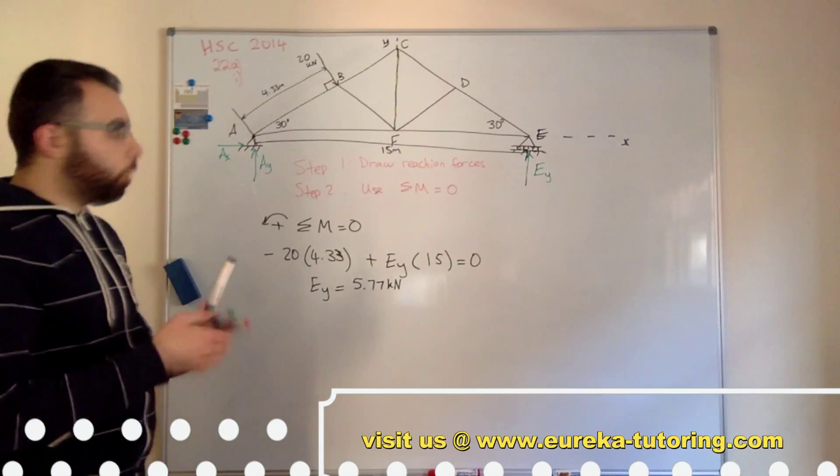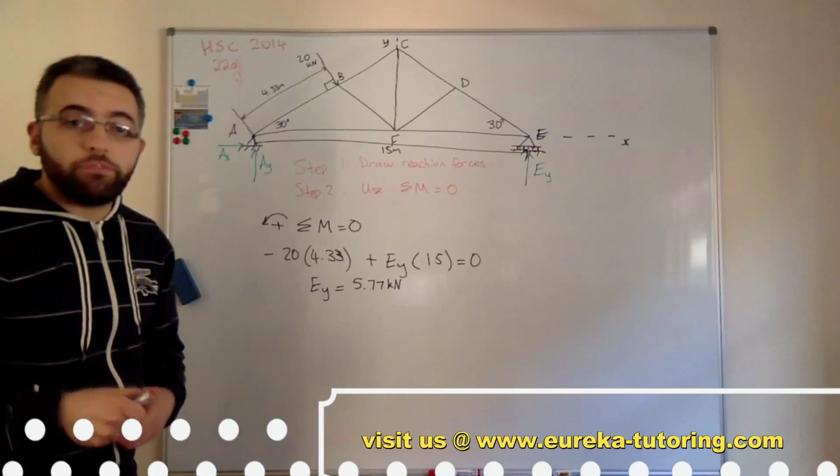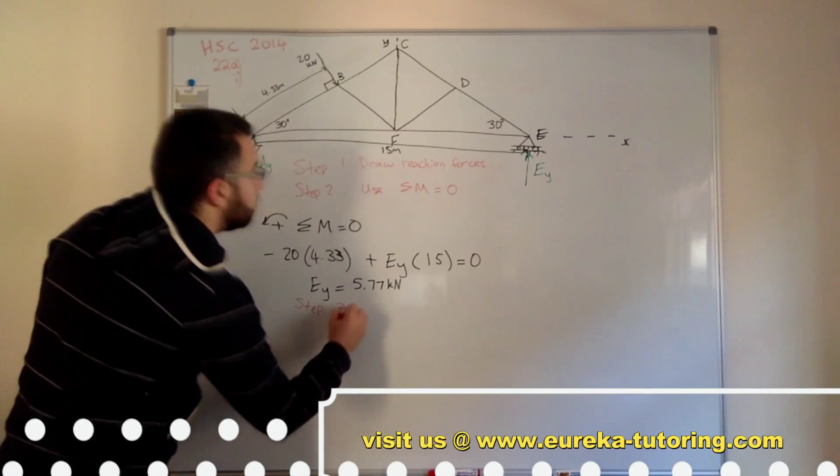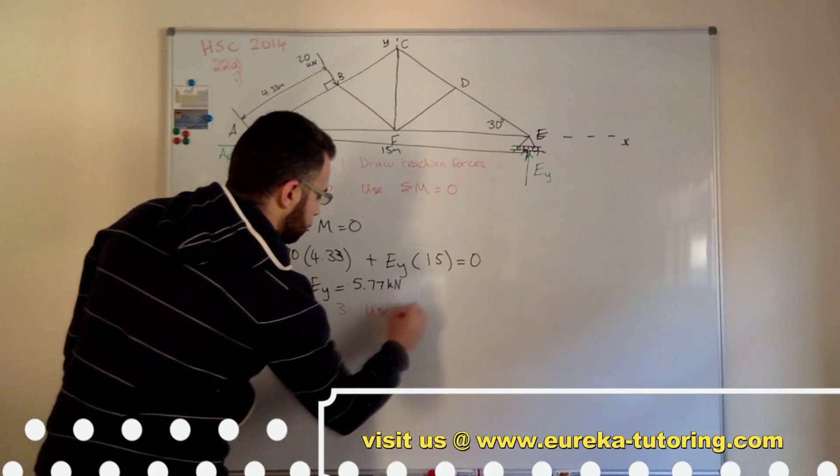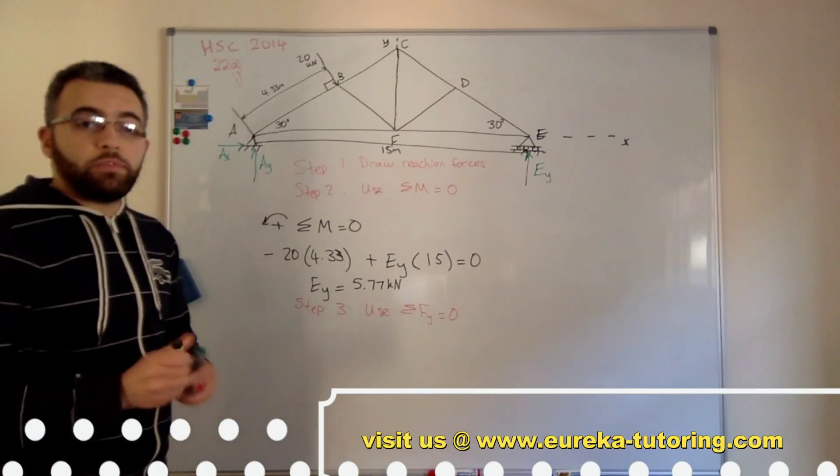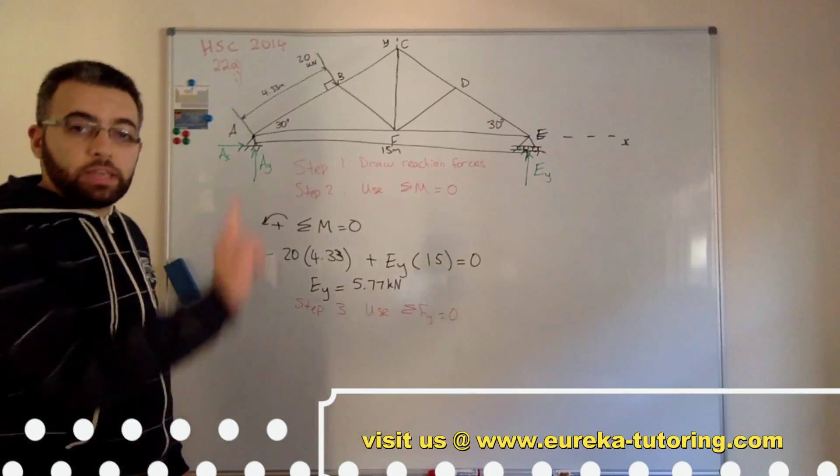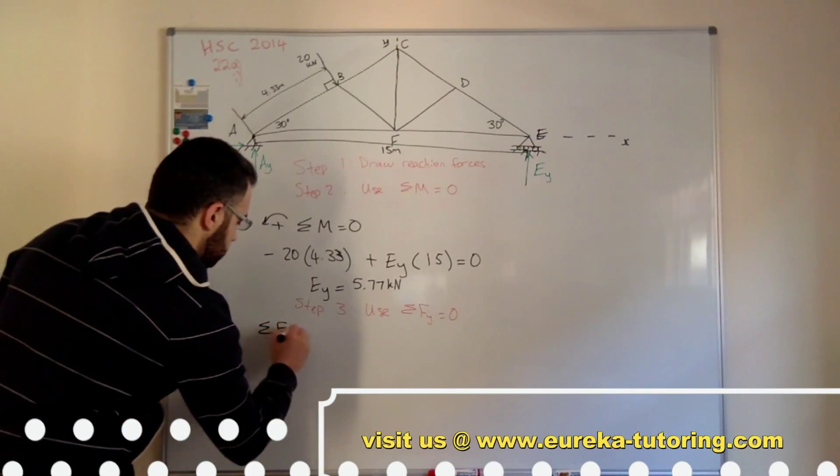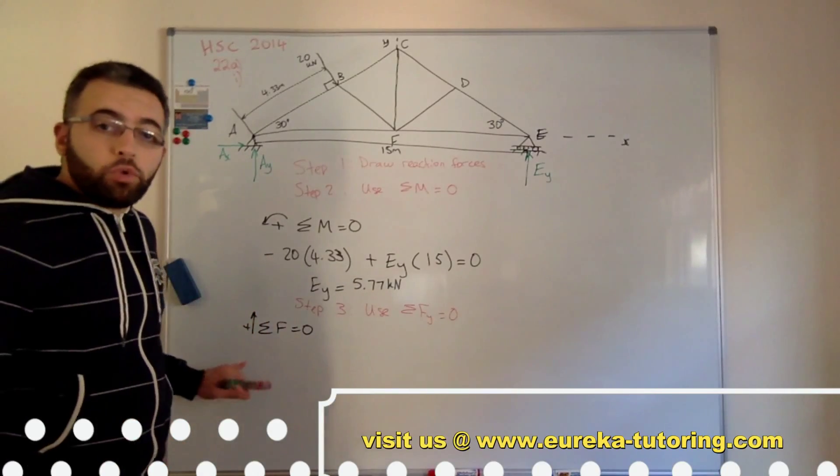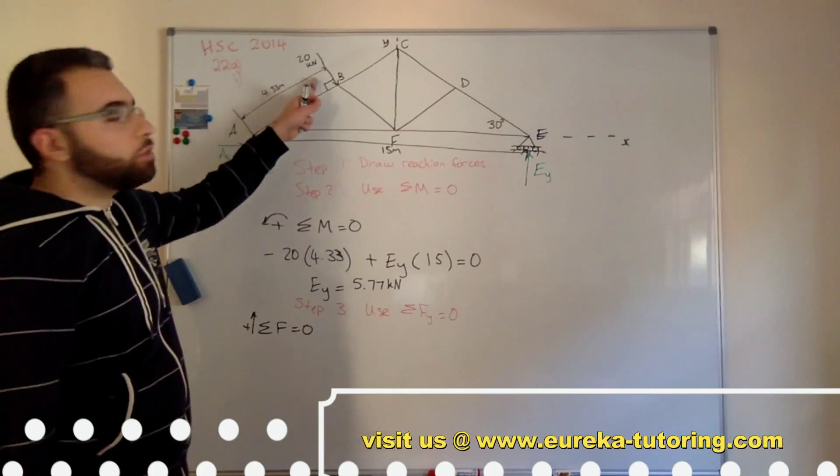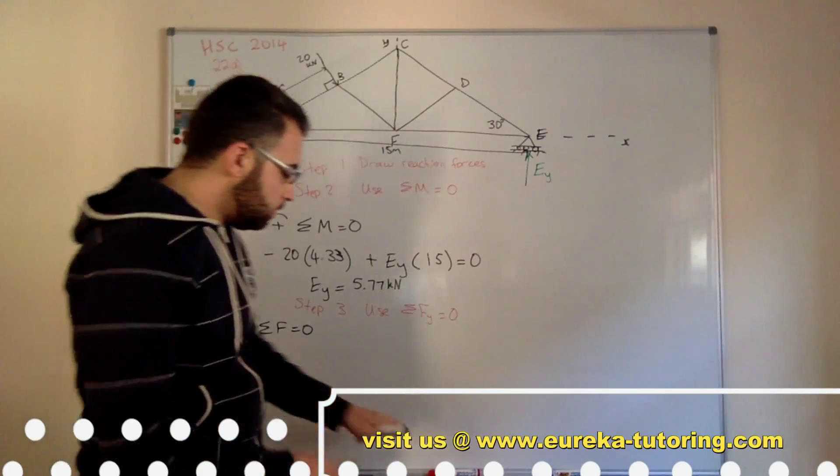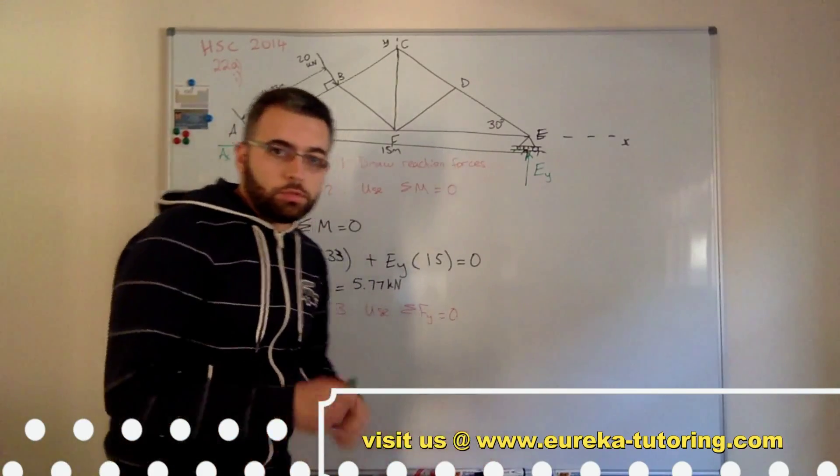Now, once you've done the sum of moments, we now move on to the sum of forces in the vertical direction. So I'll consider the forces to be positive in the upward direction. So sum of forces equals 0 in the upward direction. Now, before we begin with this equation, we need to solve this force into its horizontal and vertical components. Now, by doing this, we need to utilize some angles.